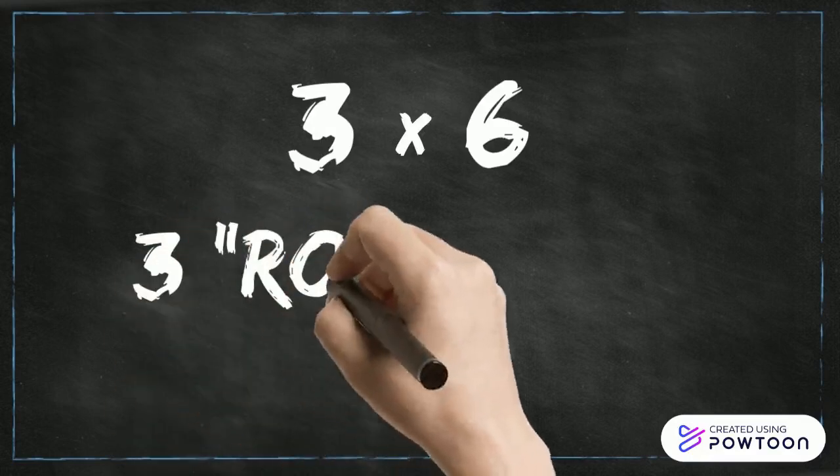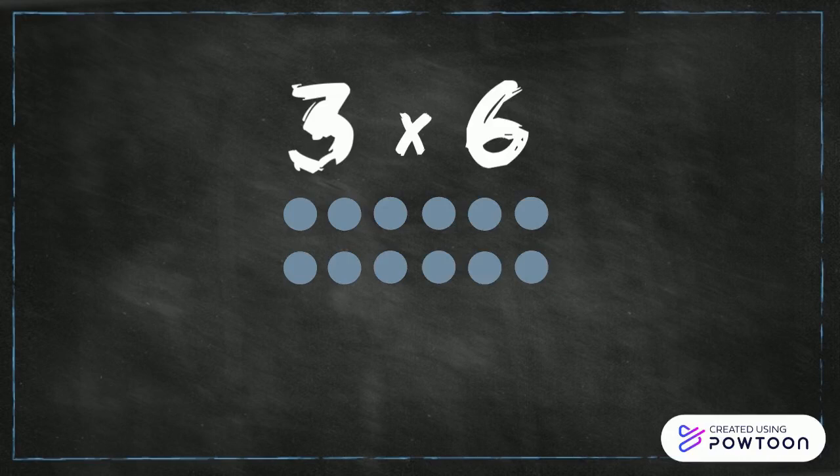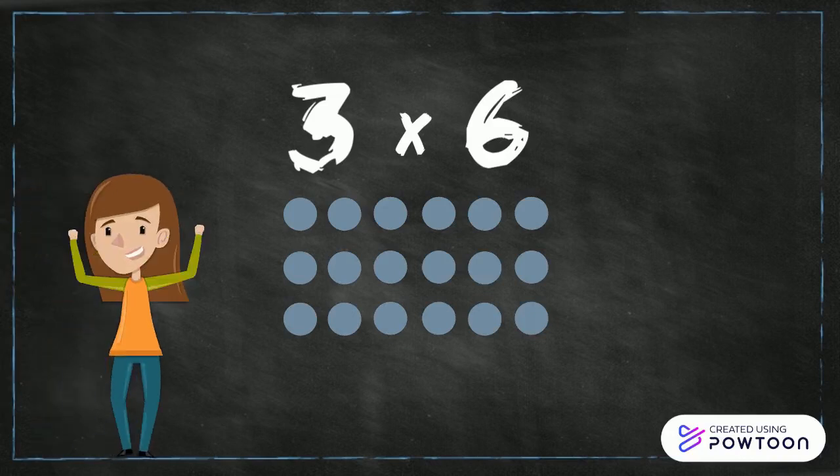Now let's solve another equation with an array. Let's do three times six. We're going to solve this by making three rows of six. Let's start by making our first row of six. Then make your second row of six below that and your third row of six below that. Now we have an array that represents the equation three times six.